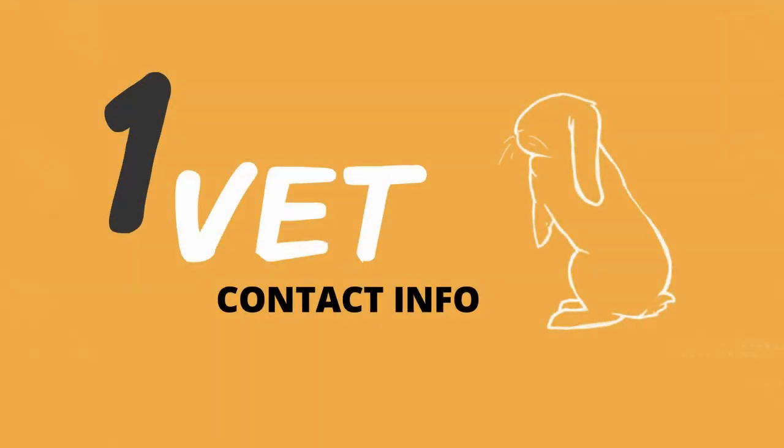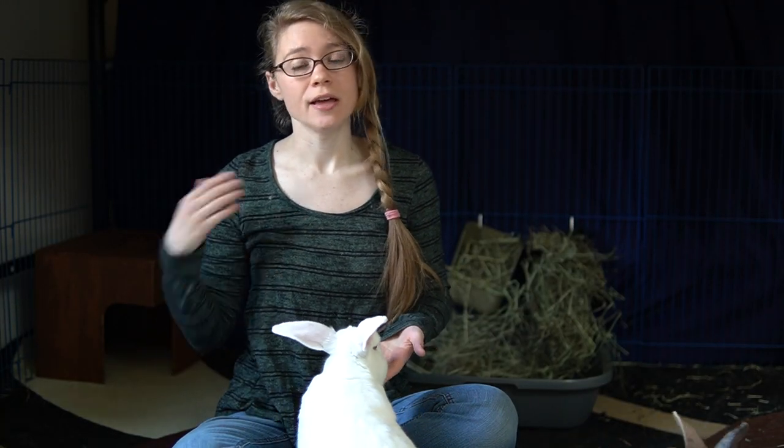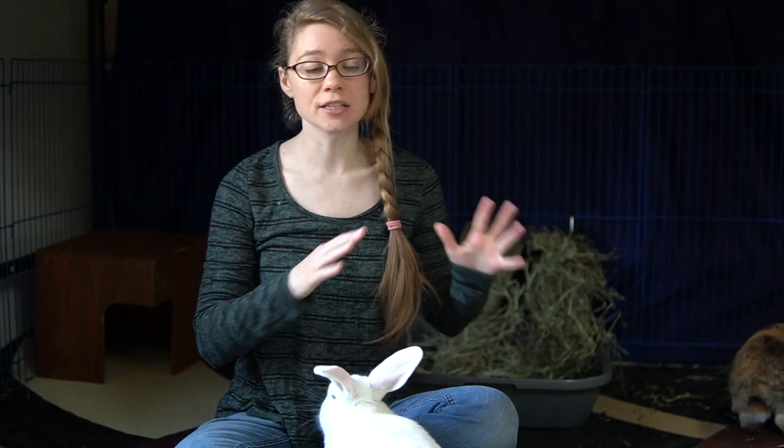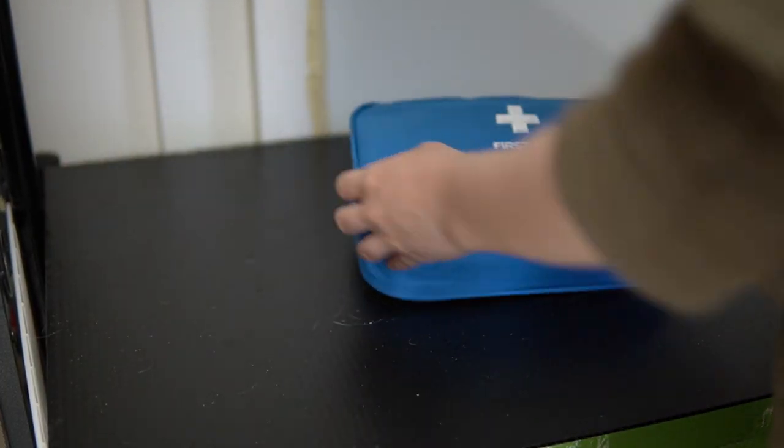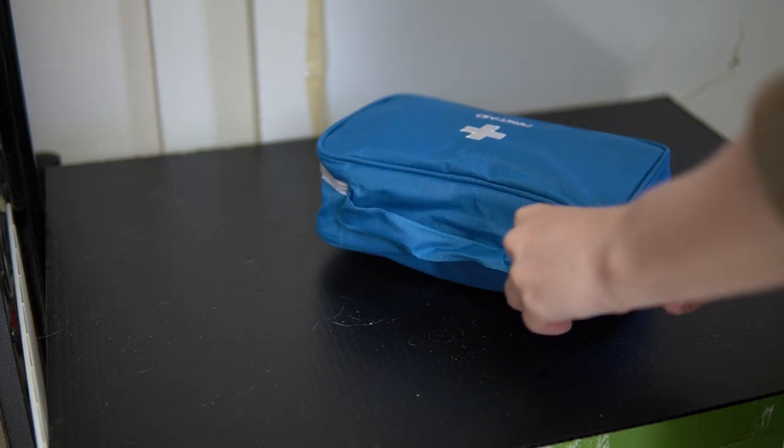The first and most important thing that you want to include in your rabbit first aid kit is the contact information of your veterinarian. It's important that you have this information in a very easy to find place so that if there is some kind of emergency, you can very easily find it and give your veterinarian a call so that you can get your rabbit help as soon as you can.